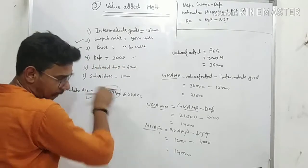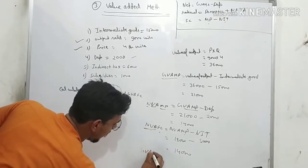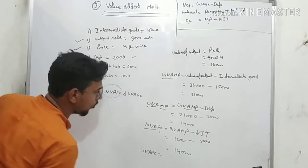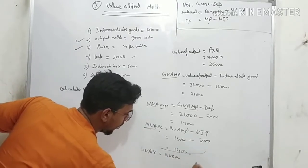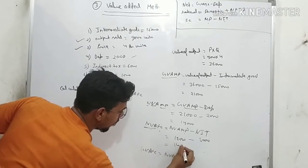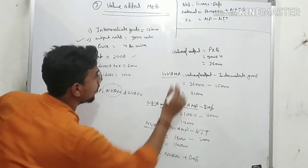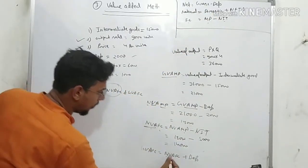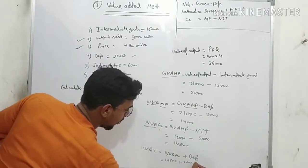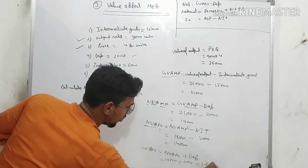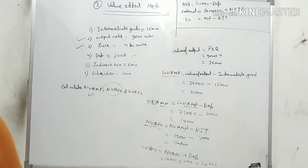Finally, find GVAFC. You've already found NVAFC = 14,000. Net plus Depreciation = Gross; everything else stays the same. GVAFC = 14,000 + 2,000 = 16,000. Please note this down and let's move forward.